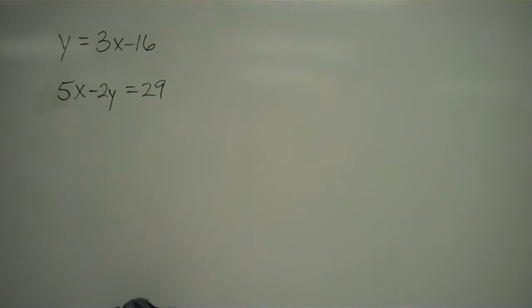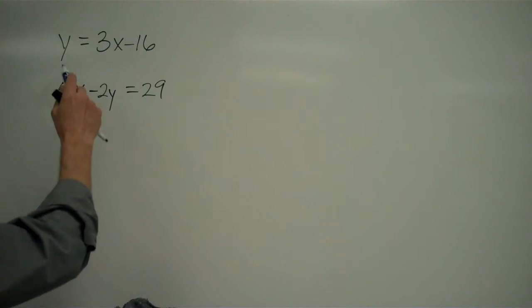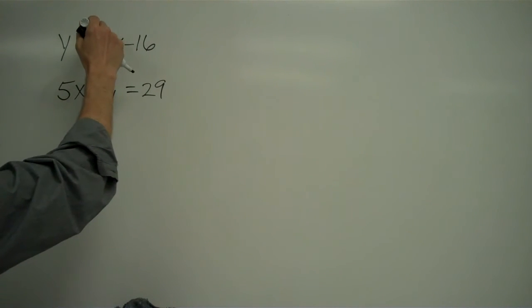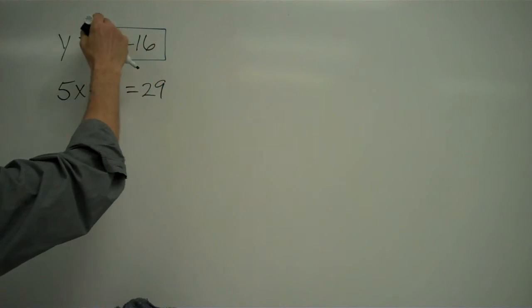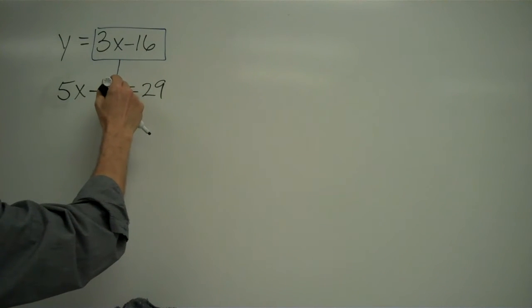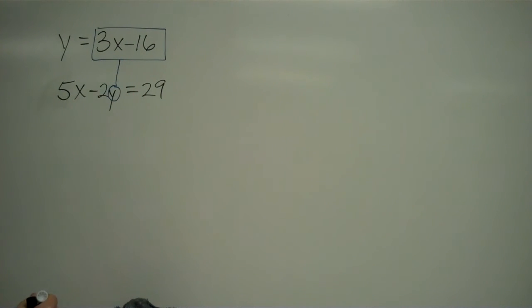There's a reason for this. I look at my two equations here and one of my equations, this first one, is already solved for one of the unknowns. I know what y is - y is 3x minus 16. So what I can do is I can take this expression 3x minus 16 and come down here and make a little replacement or substitution.